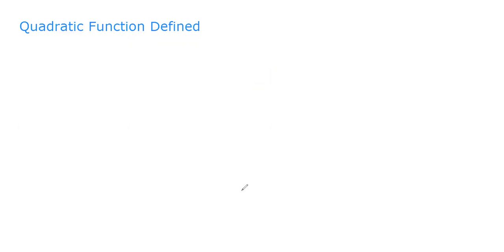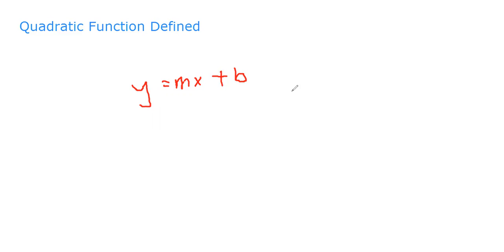What differentiates it from other functions is why it is called a quadratic function — because it has a second degree. For example, we have y = mx + b. The degree of this equation is one, because the highest exponent of this slope equation is one. So this is a linear equation — we can call it a linear function.